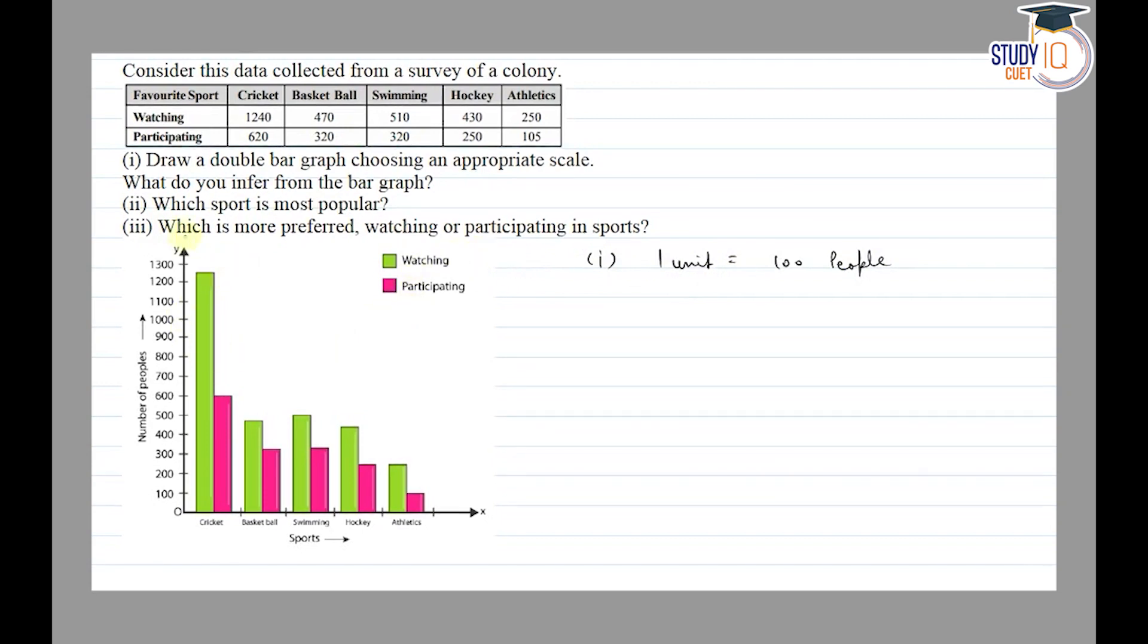We have to draw a bar graph in which we have to represent x-axis as sports and y-axis as number of people. Green color represents people who are watching and pink color represents people who are participating. The scale is 1 unit equals 100 people.